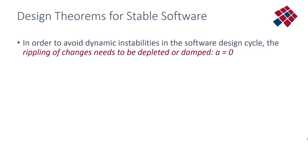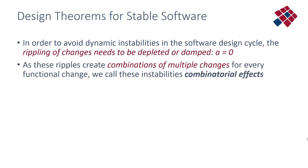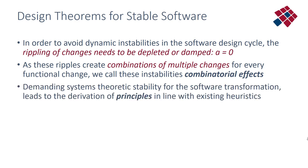We have seen that we can treat the software design cycle as a dynamic system, and in order to avoid dynamic instabilities in this design cycle we need to deplete or damp the rippling of changes, because these changes could ripple through the software structure causing what we call combinatorial effects proportional to the size of the system.